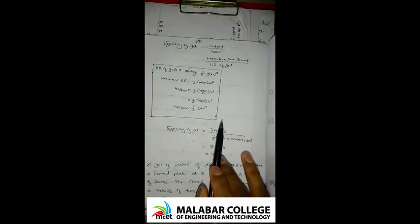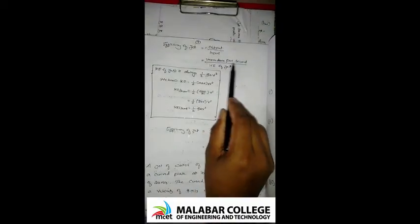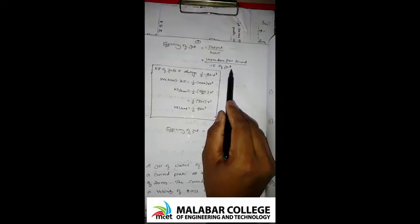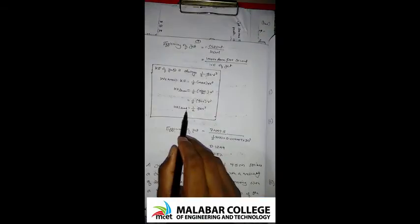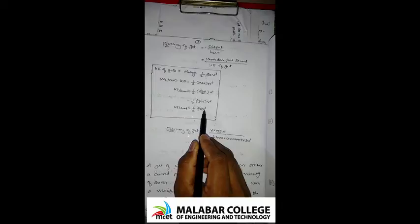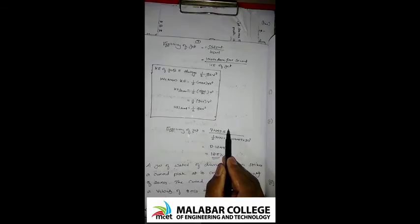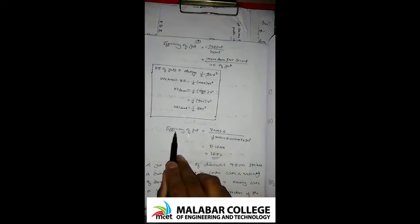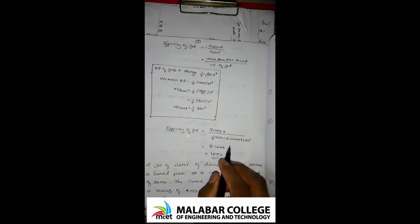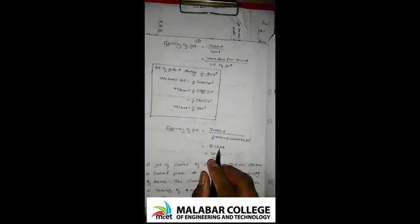The efficiency of the jet is output divided by input. Output is work done per second; input is kinetic energy per second, which is (1/2)·ρ·A·V³. Efficiency is 7453.5 divided by the kinetic energy per second, giving a jet efficiency of 12.5%.